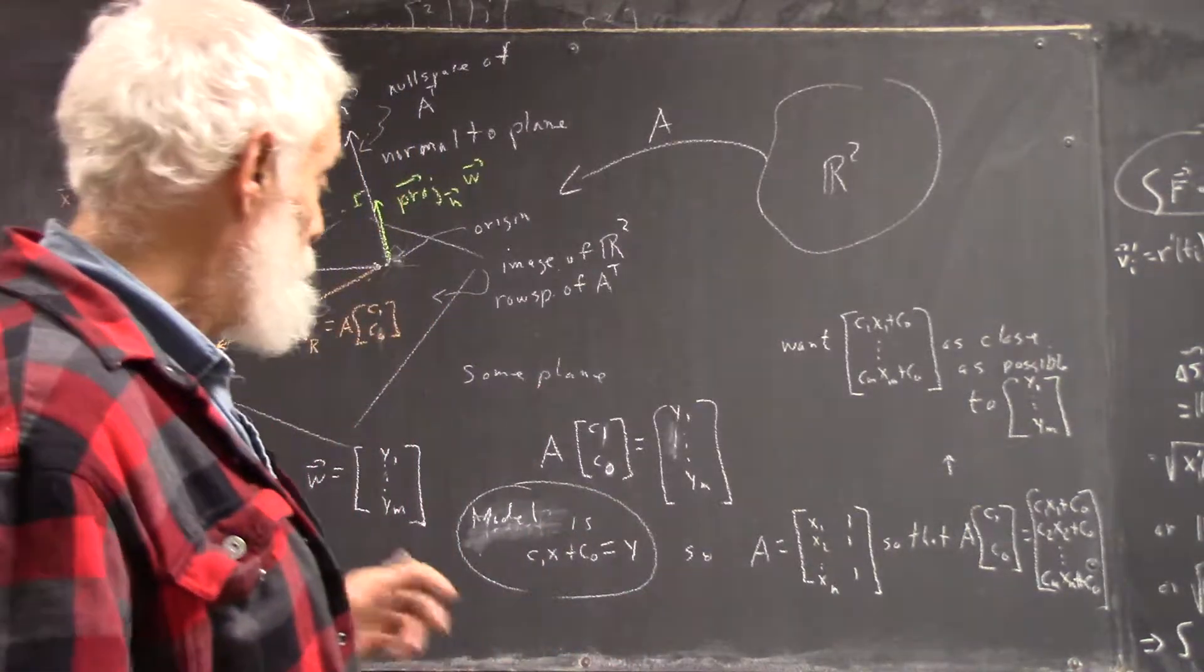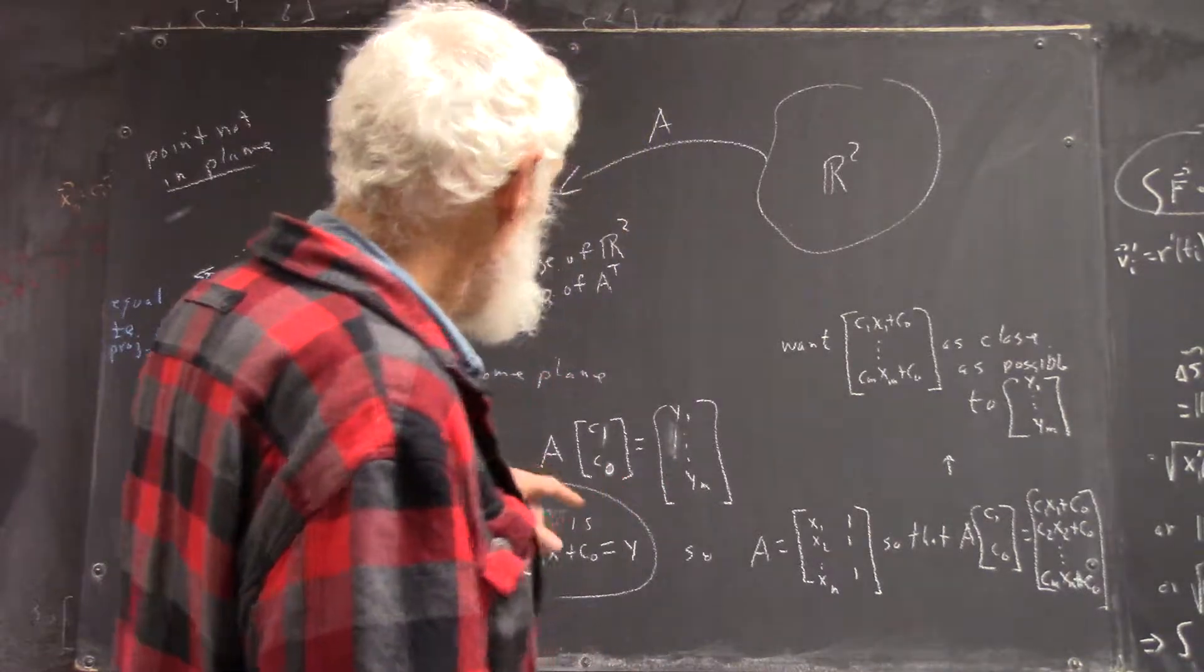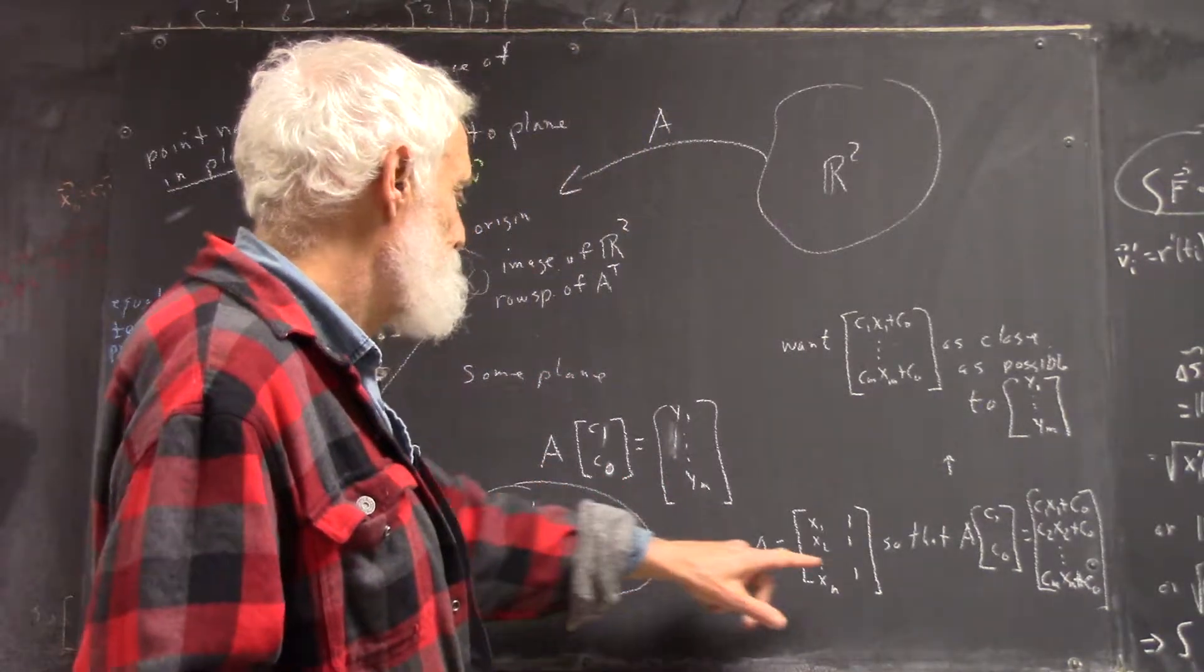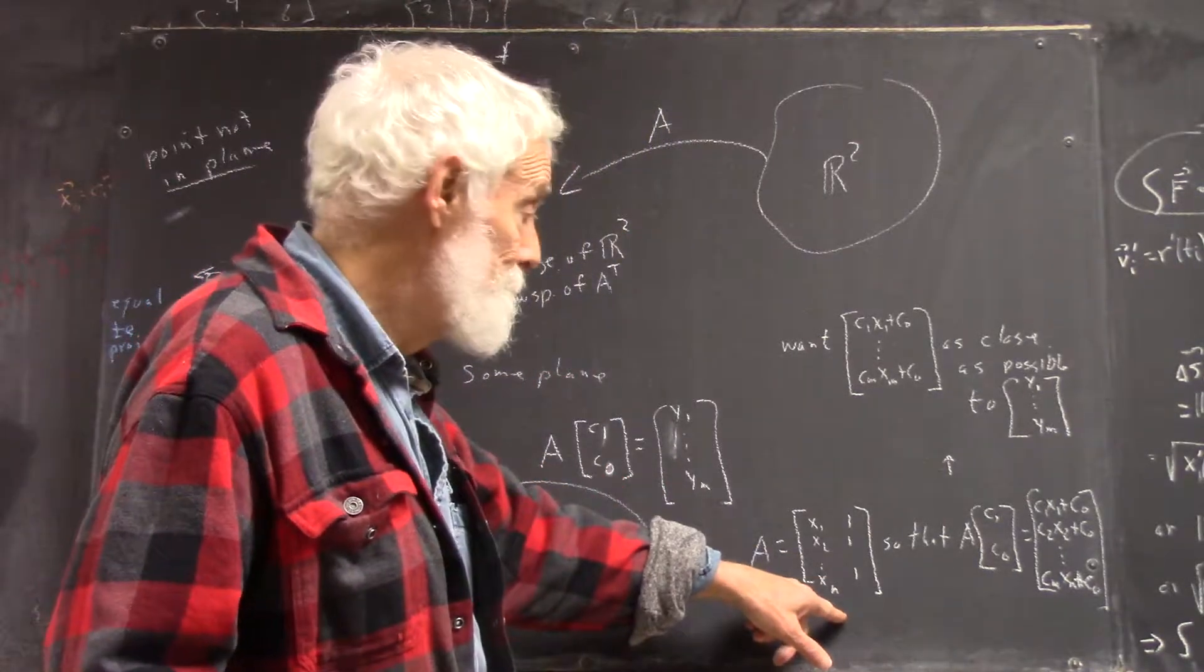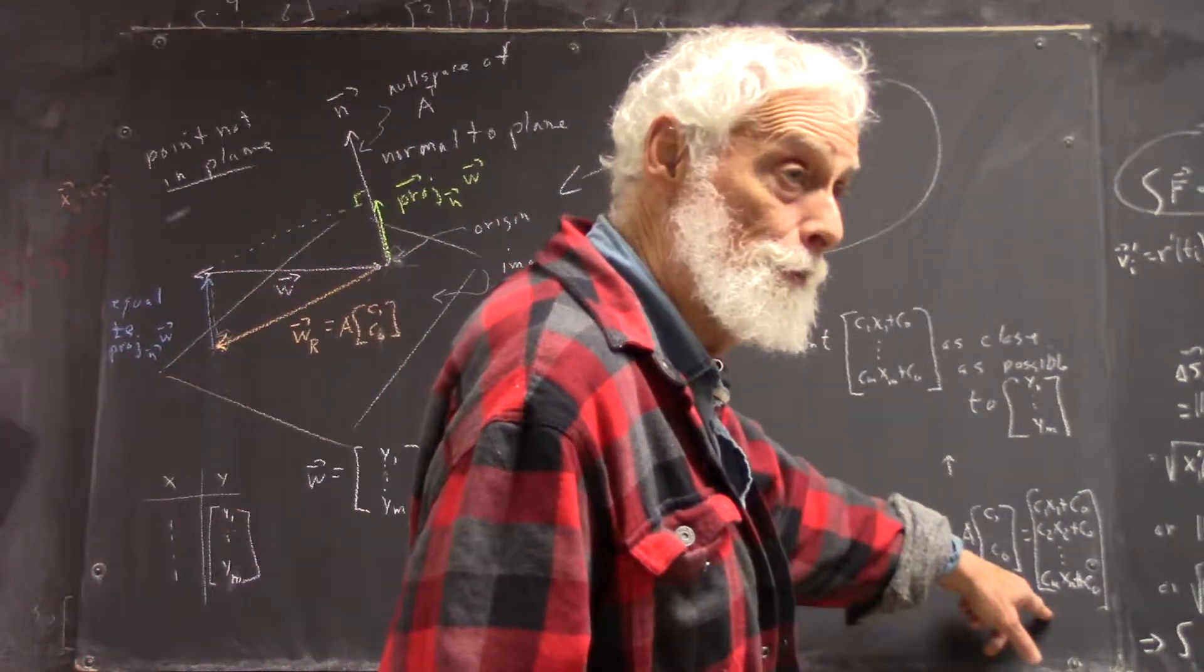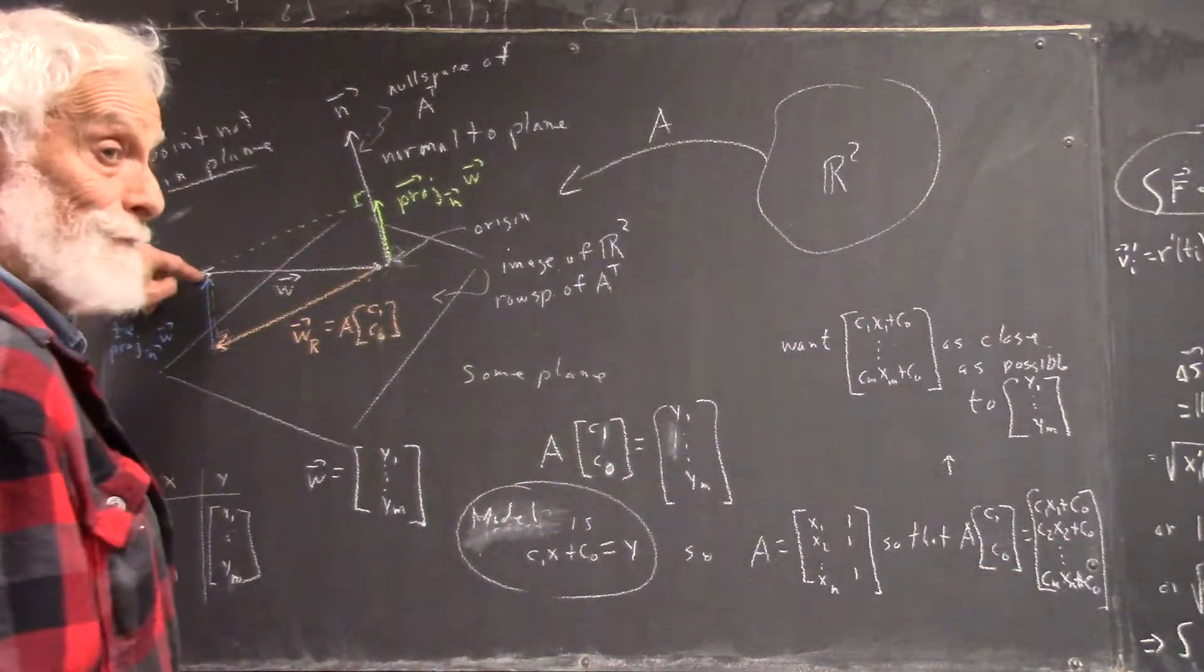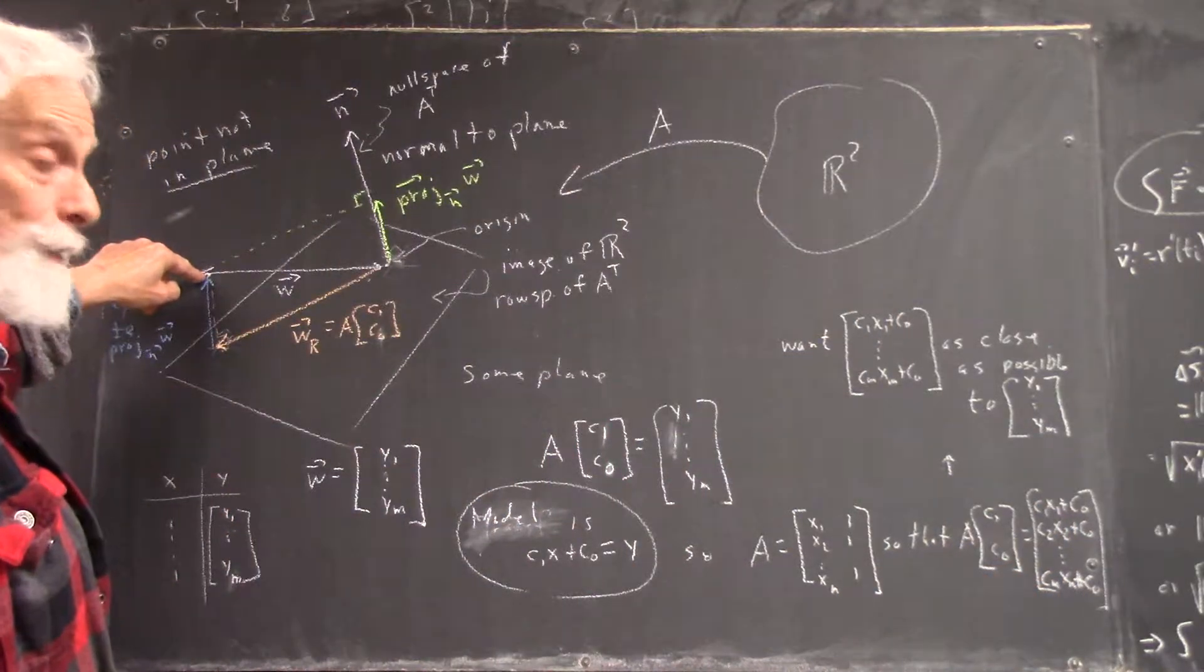Our model is this. And in the sense that, if we multiply, we're going to multiply this matrix by C1 C0, we're going to get this. This is going to be a vector over here. It's going to be this.